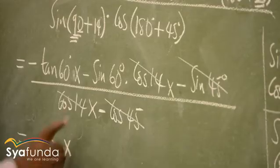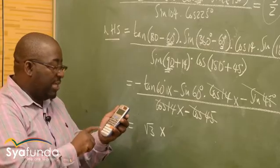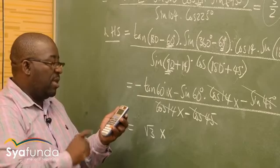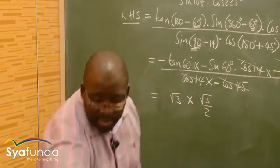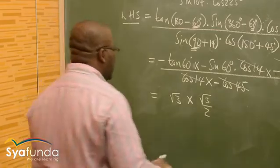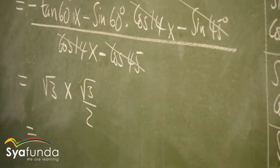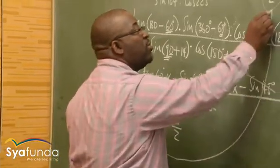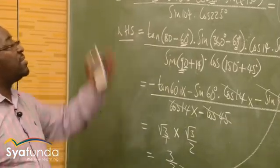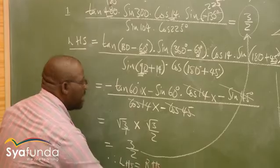This is multiplied by sin 60. We've already dealt with the negative signs. Sin 60 gives me √3 over 2. So we have √3 times √3 over 2. Square root of 3 times square root of 3 equals 3. This is over 1 times 2, which is 2. Yes — this is exactly what we wanted to get. So it is true that this side is equal to 3 over 2. Therefore, the left-hand side equals the right-hand side.